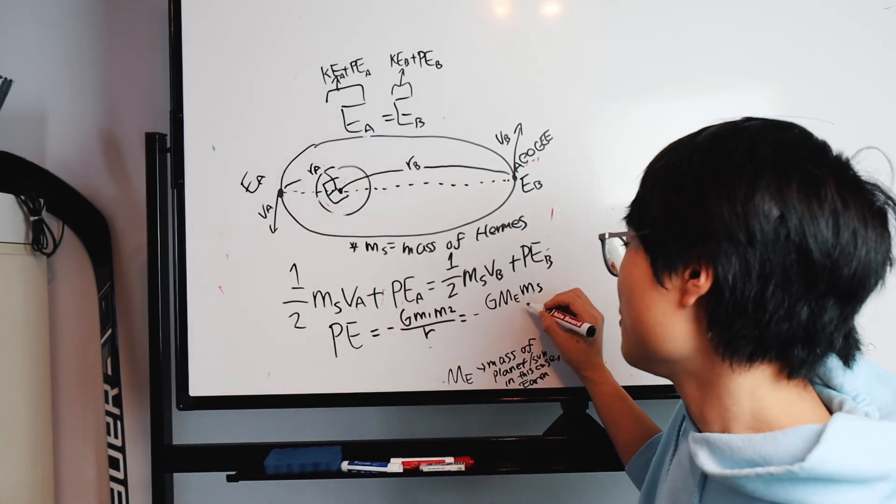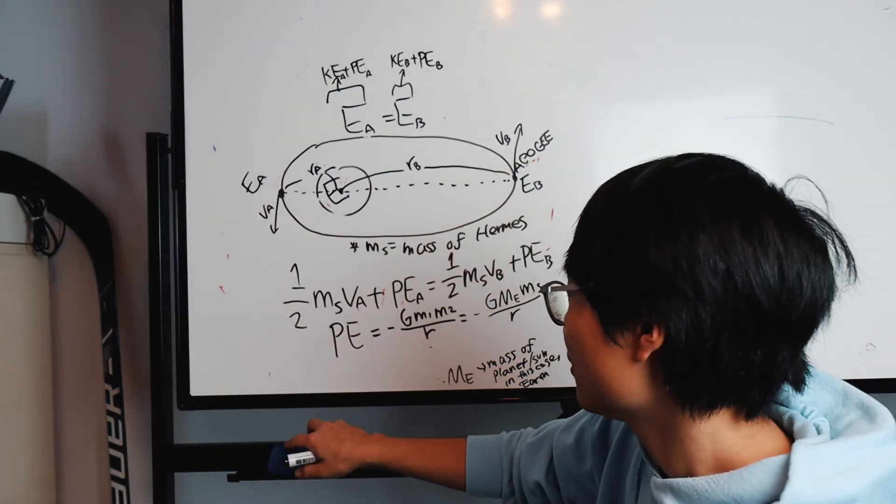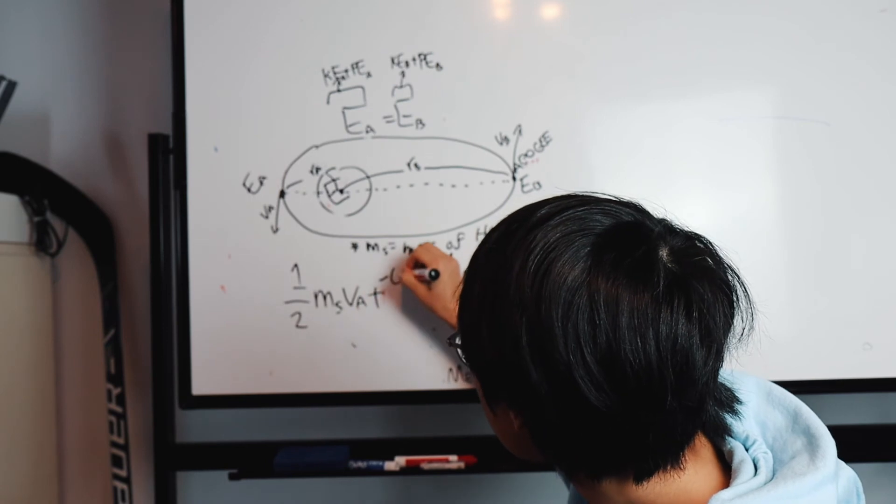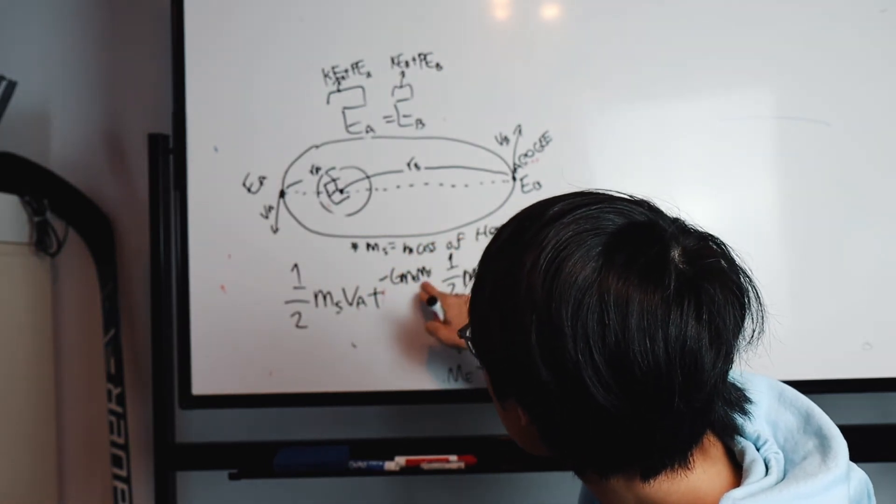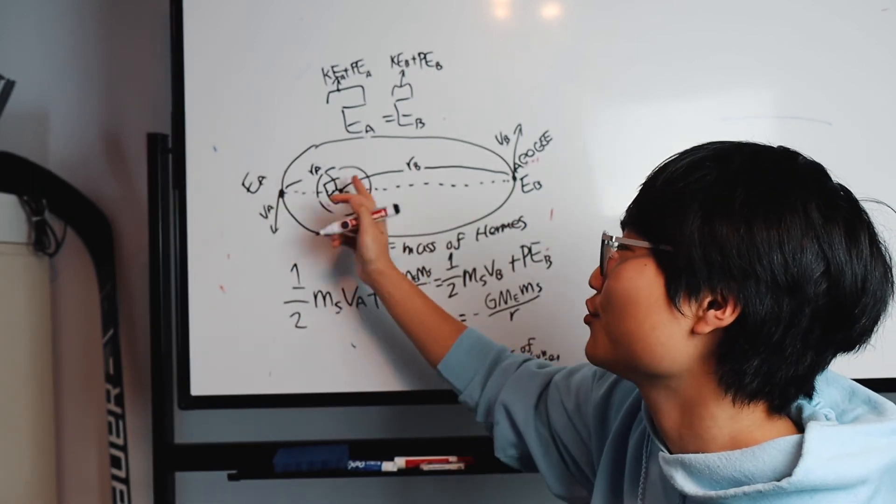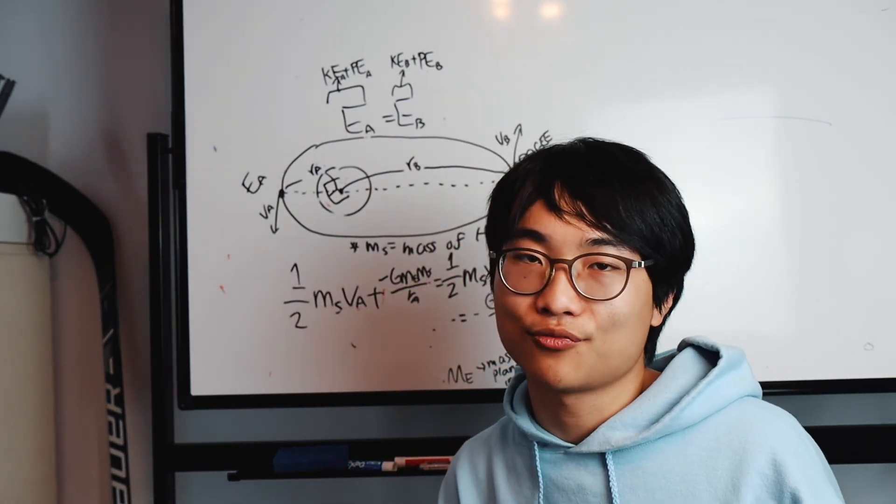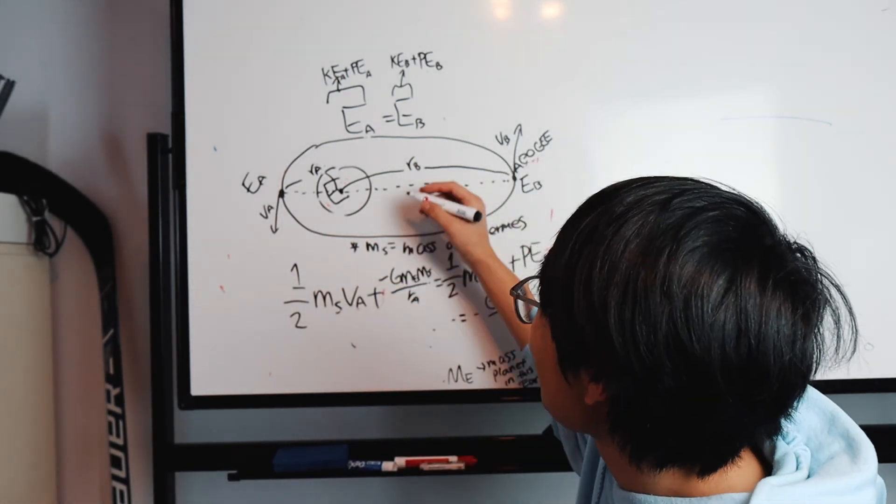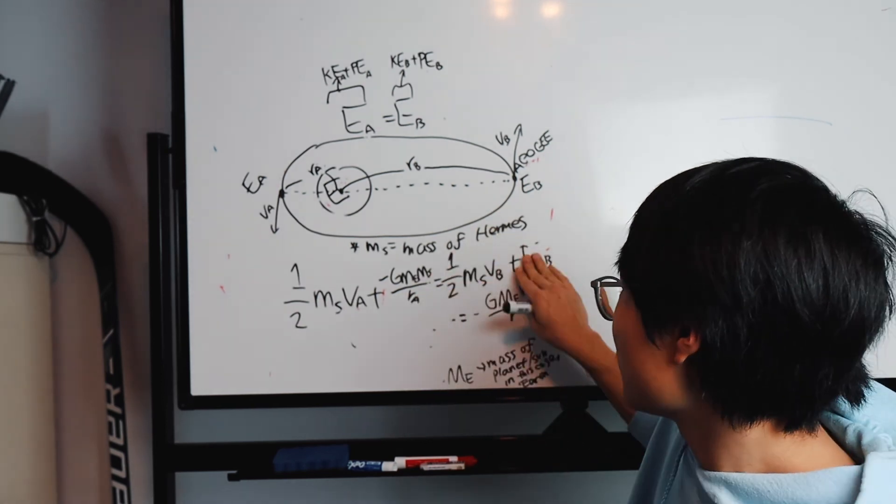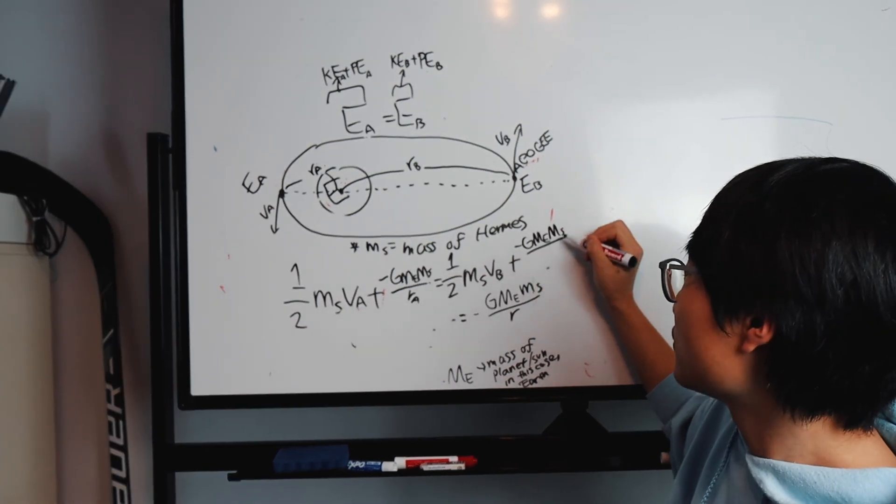We got the value of potential energy. We're going to plug it in the equation. It's going to be negative G ME MS over R. In this case, R is going to be RA, since RA here and RB here are going to be different. See the reason why we got R instead of H? Because we're going to use this formula instead of the one that involves H. Here, negative G ME MS over RA equals 1/2 Ms Vb squared plus negative G ME MS over RB.